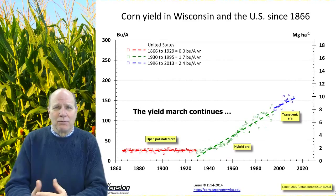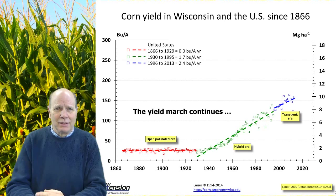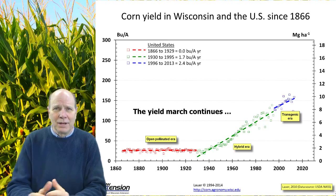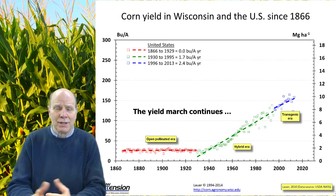If you look back, we have records in Wisconsin and much of the U.S. for corn yield way back to 1866. If you look at the corn yield progress that occurred up until the 1930s, there really wasn't much — the slope was basically zero. But with the advent of hybrid corn in the 1930s, we started to see a yield increase of 1.7 bushels per acre. There have been a number of reasons for these yield increases, including hybrids, fertilizer, and pesticide use.